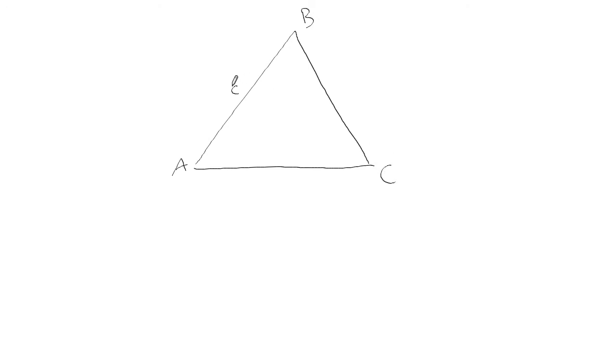So if that angle is C, then that side is little c. Okay, so how are we going to apply Pythagoras if we don't have any right triangles? Well what we could do is drop an altitude down and maybe we can call that distance h. Okay, so now we've got two right triangles. We've got that one and that one.